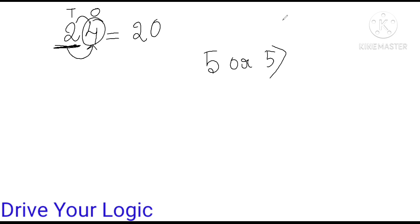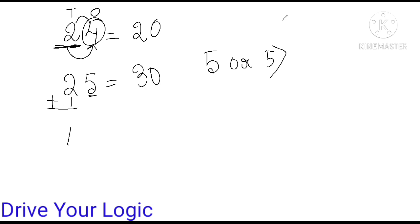It will be 20 because this digit is not 5, so there will be no increment. If it would be 5 — like 25 — and the question is round off to nearest tens, since it is 5, one will be added to the next digit. So your answer will be 30.